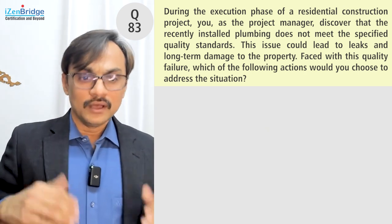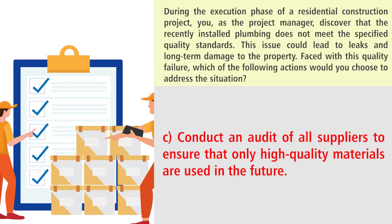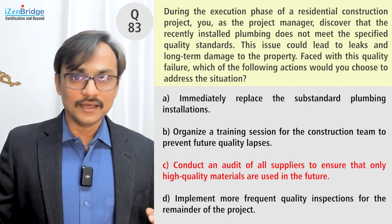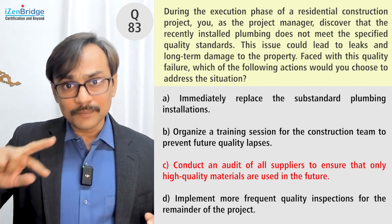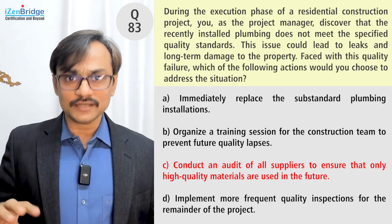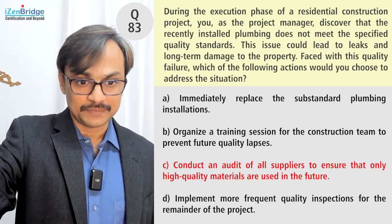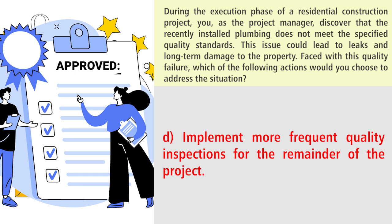Option C: conduct an audit of all suppliers to ensure that only high-quality materials are used in the future. Same problem as Option B — it is also focusing on prevention. I should do that, but I need to do corrective action first, so I skip that. Option D: implement more frequent quality inspections for the remainder of the project. This also points to prevention rather than correcting the current issue.